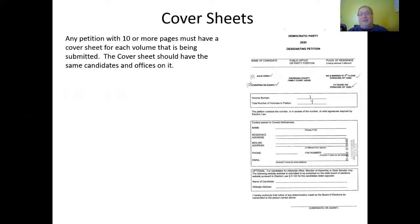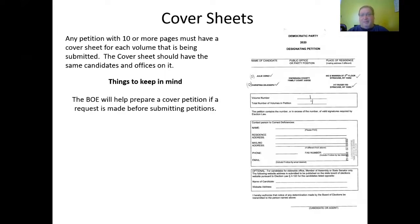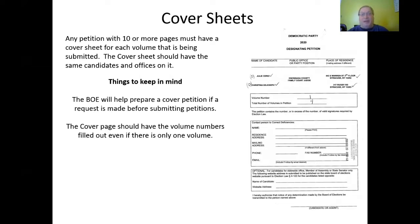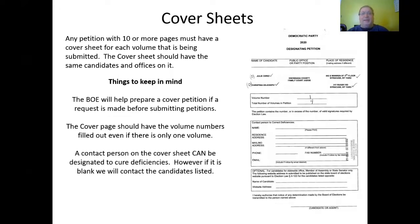Cover sheets: any petition with 10 or more pages must have a cover sheet for each volume being submitted. That cover sheet should have the same candidates and offices on it. The BOE will help prepare a cover petition if a request is made before submitting petitions. The cover page should have the volume numbers filled out even if there's only one volume. A contact person on the cover sheet can be designated to cure deficiencies; however, if it is blank, we will contact the candidates listed.